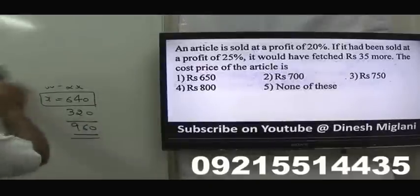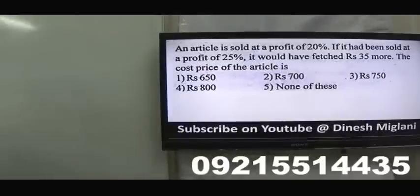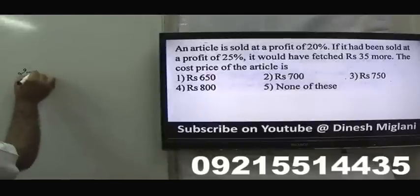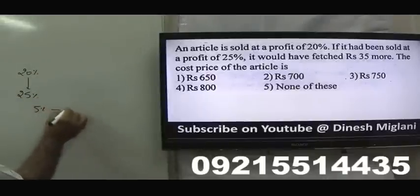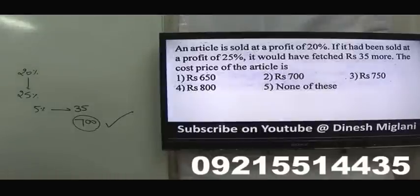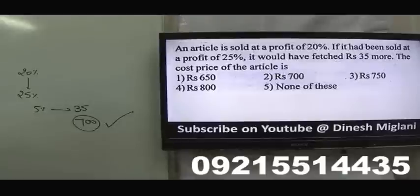An article sold at 20% profit. If sold at 25% profit, he would have received ₹35 more. Difference in profit = 25 − 20 = 5%. So 5% = ₹35, meaning 100% = ₹700. Cost price = ₹700. Answer: second option, ₹700.